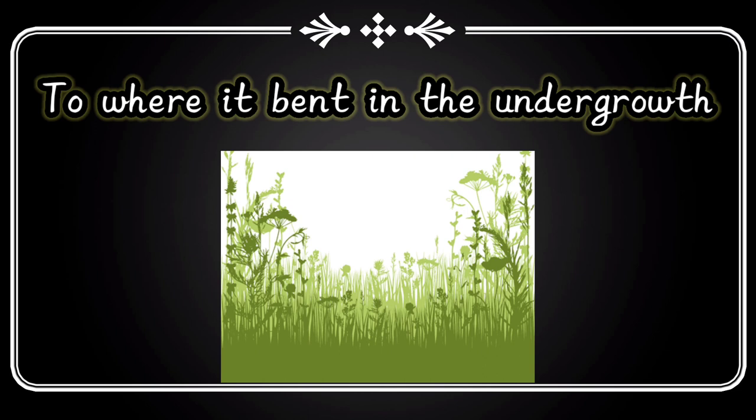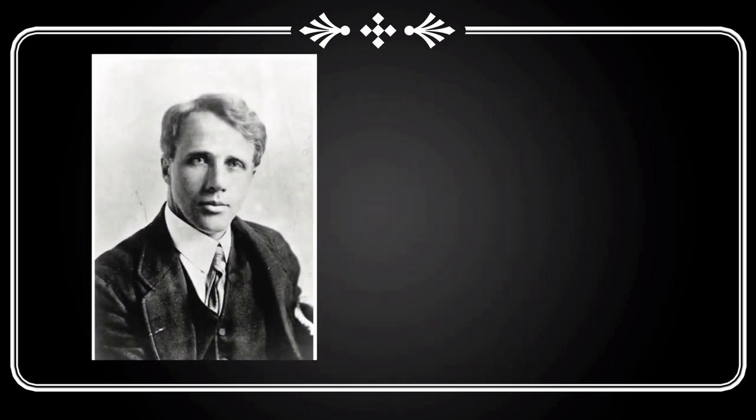Undergrowth यानि जो bushes होते हैं, उनके बारे में poet हमें बता रहा है। Point दूर तक देखता है, लेकिन वो रास्ता बीच में ही bend हो जाता है, तो poet को और आगे दिखाई नहीं देता। तो ये हो गया हमारा superficial meaning — लेकिन जब हम इसका in-depth meaning देखेंगे, तो हमें पता चलेगा कि poet हमें कुछ और ही बताना चाहते हैं।